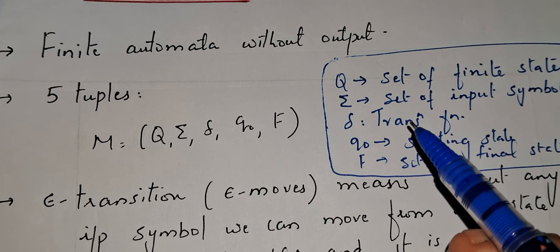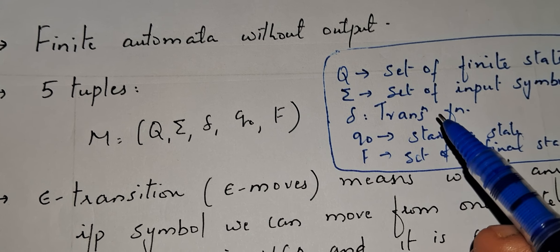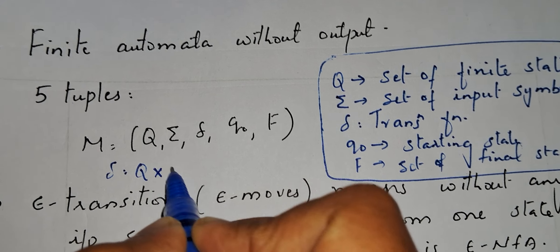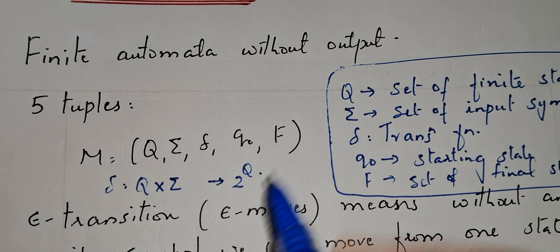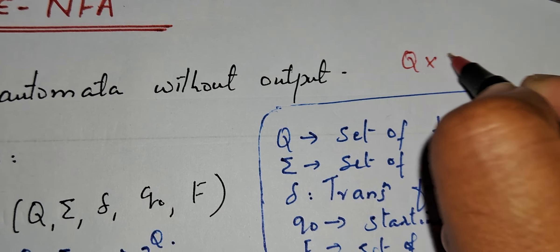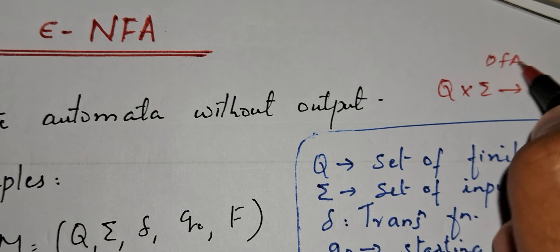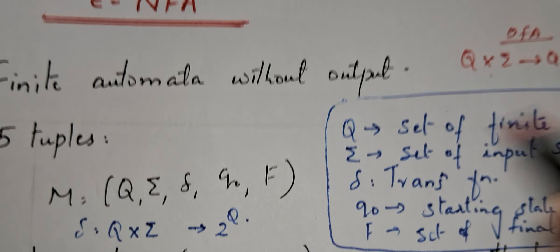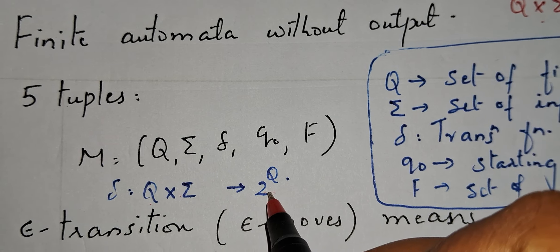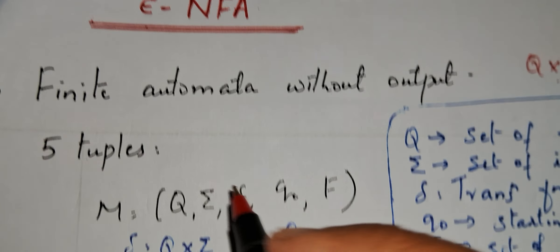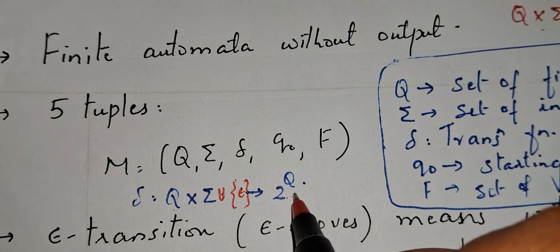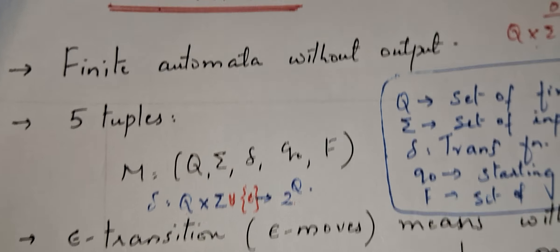In epsilon NFA, along with input symbols we need to represent epsilon moves also. The transition function of NFA is Q cross Sigma gives 2 power Q — a state on an input symbol goes to more than one state. For DFA it is Q cross Sigma gives Q. For epsilon NFA the transition function is Q cross (Sigma union epsilon) gives 2 power Q, so epsilon moves are added.